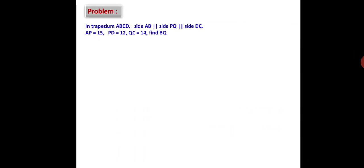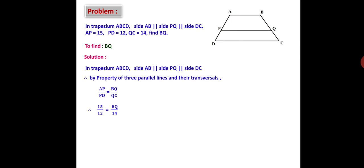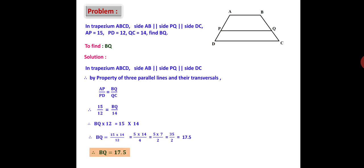One problem based on this: in trapezium ABCD, side AB is parallel to side PQ, which is parallel to side DC. AP = 15, PD = 12, QC = 14. Find BQ. By the property of three parallel lines and their transversals: AP/PD = BQ/QC. Substituting: 15/12 = BQ/14. Cross multiplying: BQ × 12 = 15 × 14. Therefore BQ = (15 × 14)/12 = 210/12 = 17.5.